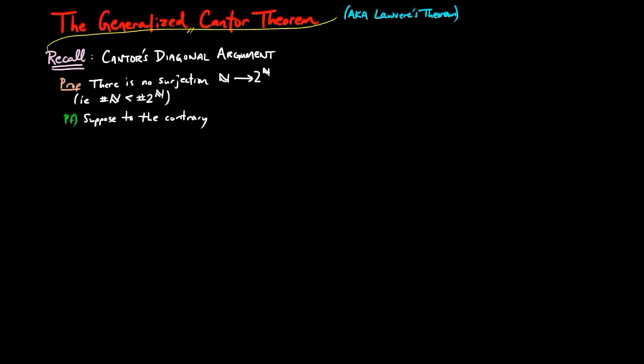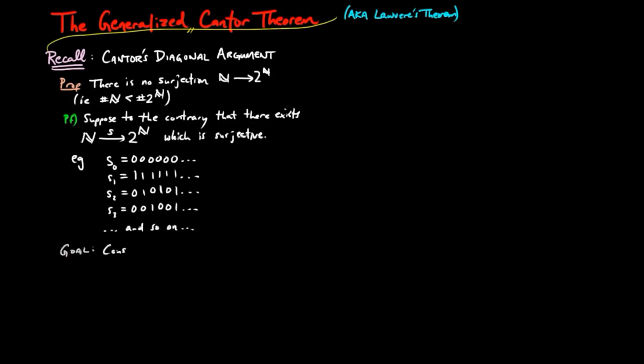We suppose to the contrary that there exists an enumeration, s, which is surjective. Take this s and give a list of infinite sequences of zeros and ones. Then our goal is to take this enumeration and construct a characteristic map of n, which is not in the list.